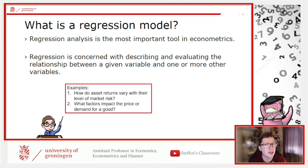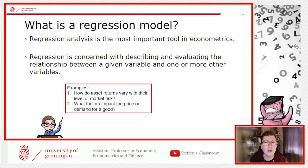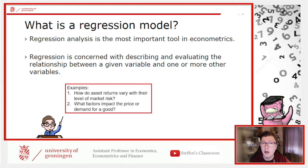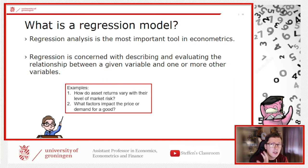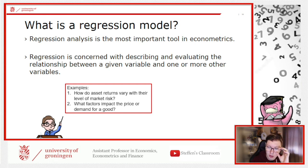A typical example is the CAPM — how does the return on one asset vary with the level of market risk? You look at the excess return of a stock and how it relates to the excess return of the market. Another example is what factors impact the price or demand for a good. In my own research, I'm studying Swedish fine art paintings — trying to relate the hammer price to characteristics of the painter, the painting, and where it was sold.